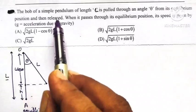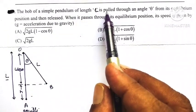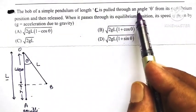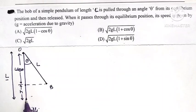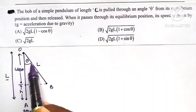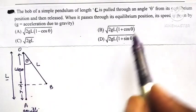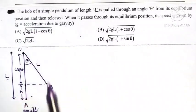What is given? The bob of the simple pendulum is pulled through an angle theta from its equilibrium position and then released.